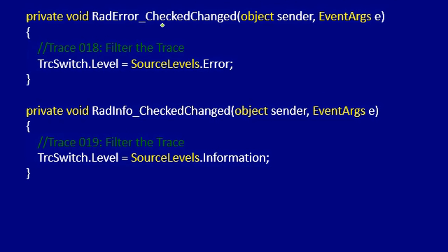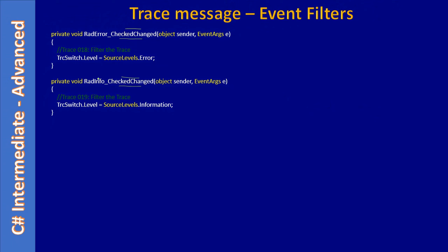If you see here, we handle our radio button events. This is our first radio button with the 'checked changed' event we are handling. For the second radio button we are also handling the same event — here we are directly setting the level as error, and when the second radio button changes we are setting it as information.